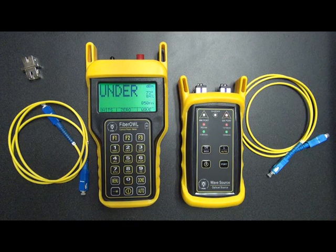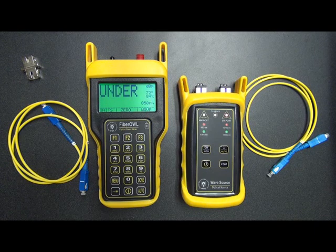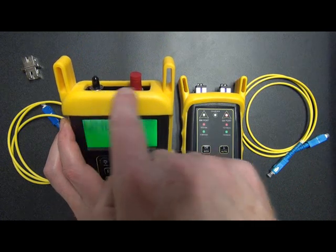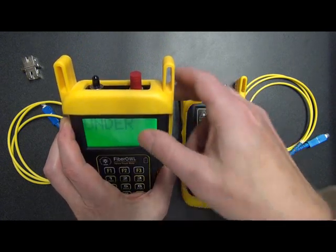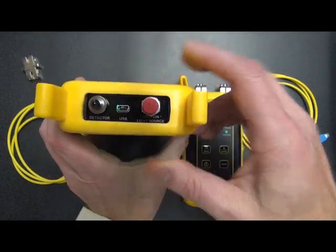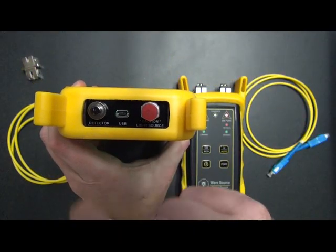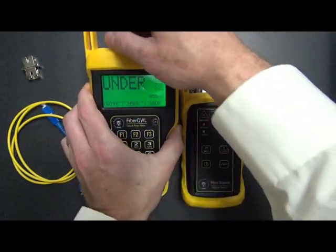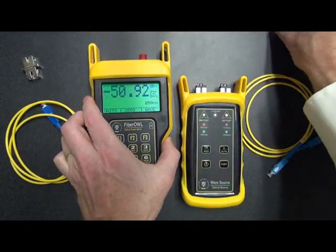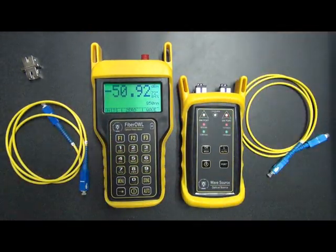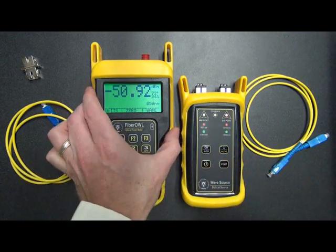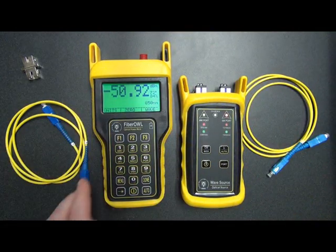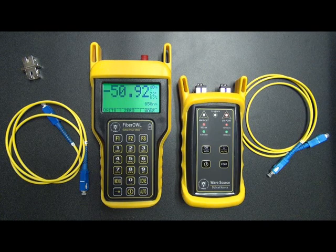On the screen, we'll see the word under. What under means is that there's no light entering the photodetector. You'll notice that there's a dust cap on the photodetector. Fiber Owl power meters will have two ports. You're looking for the port that says detector here. Because there's a dust cap on the detector port, it says under. When we remove the dust cap, you'll notice that we see a power reading. What's happening now is that the power meter is measuring ambient room light. So that's the only light that's coming in here is light from the ceiling. This is normal, so don't worry about that.